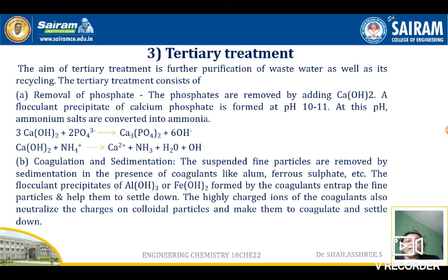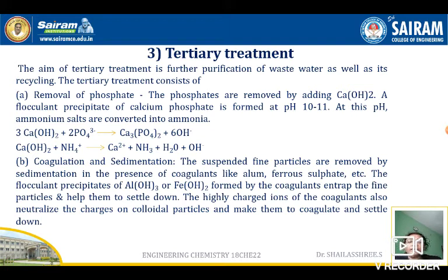Coagulation and sedimentation are again carried out if fine suspended particles remain. Coagulants like alum and ferrous sulfate are added to entrap fine particles and help them settle down. The coagulants cause microscopic particles to come together to form larger particles, which then settle faster. This step further purifies the water from any remaining suspended fine particles.